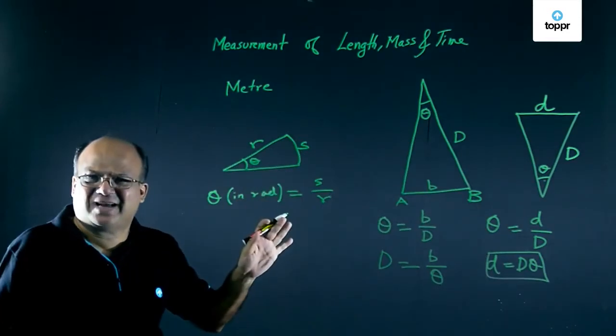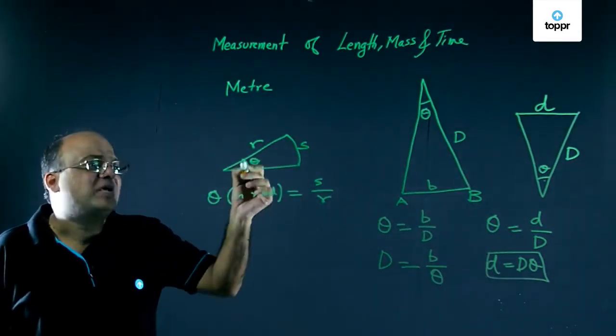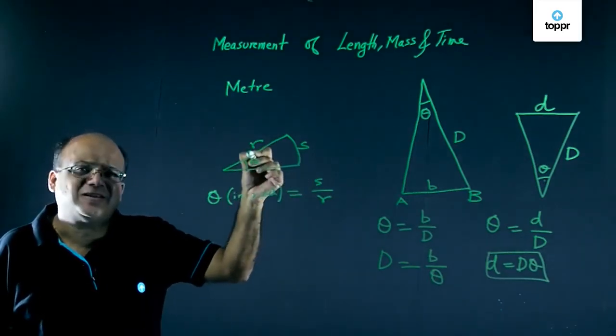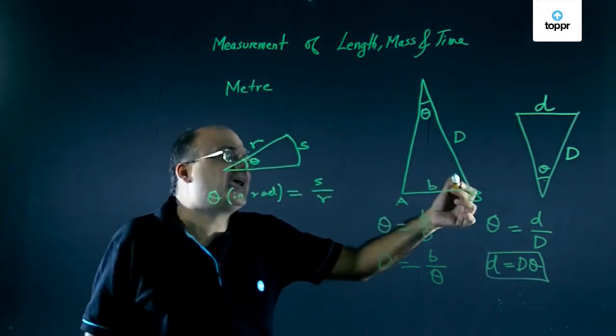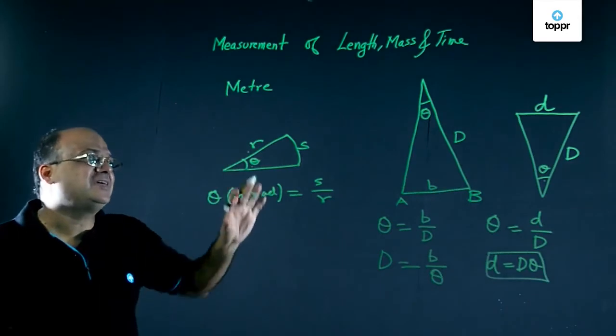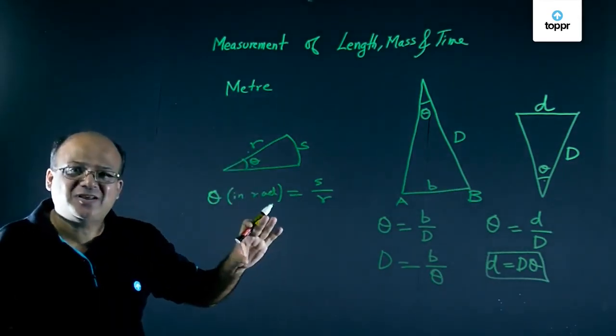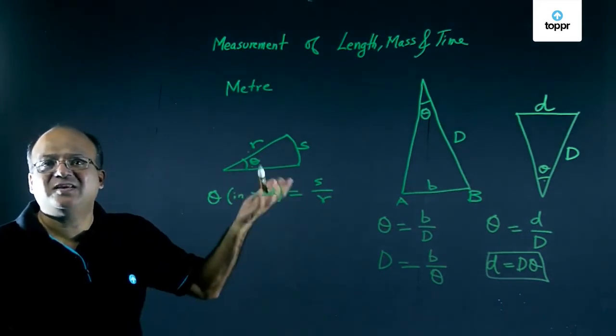Parallax method is as simple as that. Just using the fact that theta is S upon R. S is length of arc and R is radius. This straight line can be taken almost as an arc. And based on that we get the distance D to a star or the diameter small d of a planet, star, sun, moon etc.